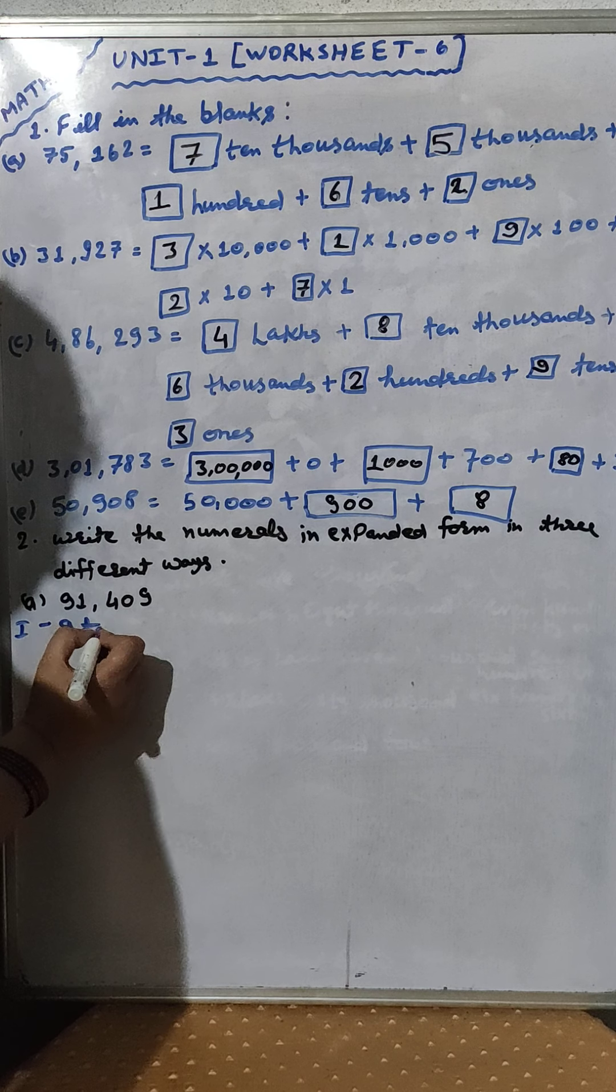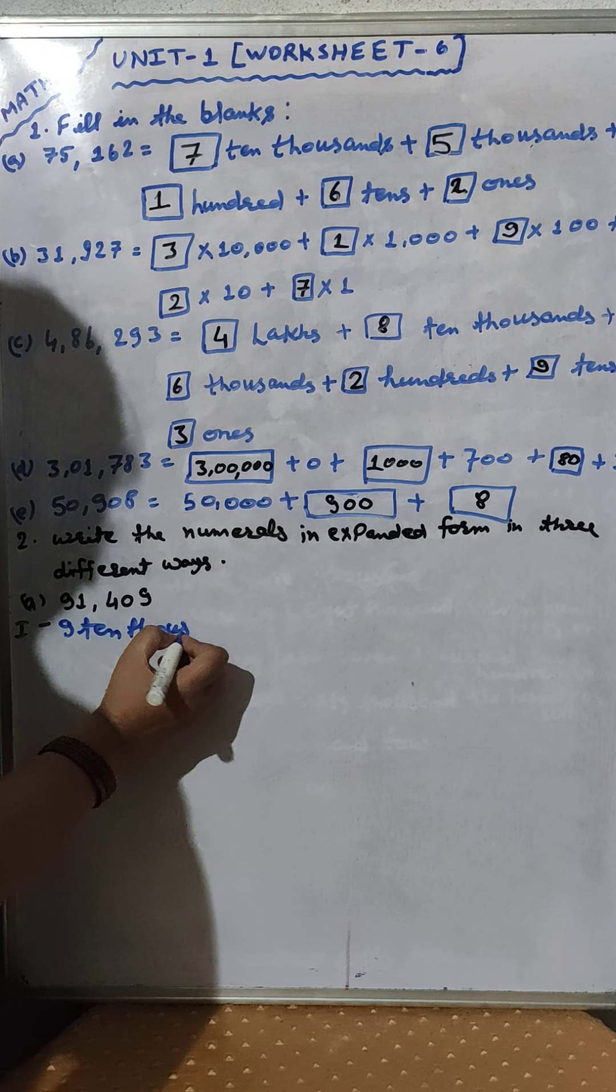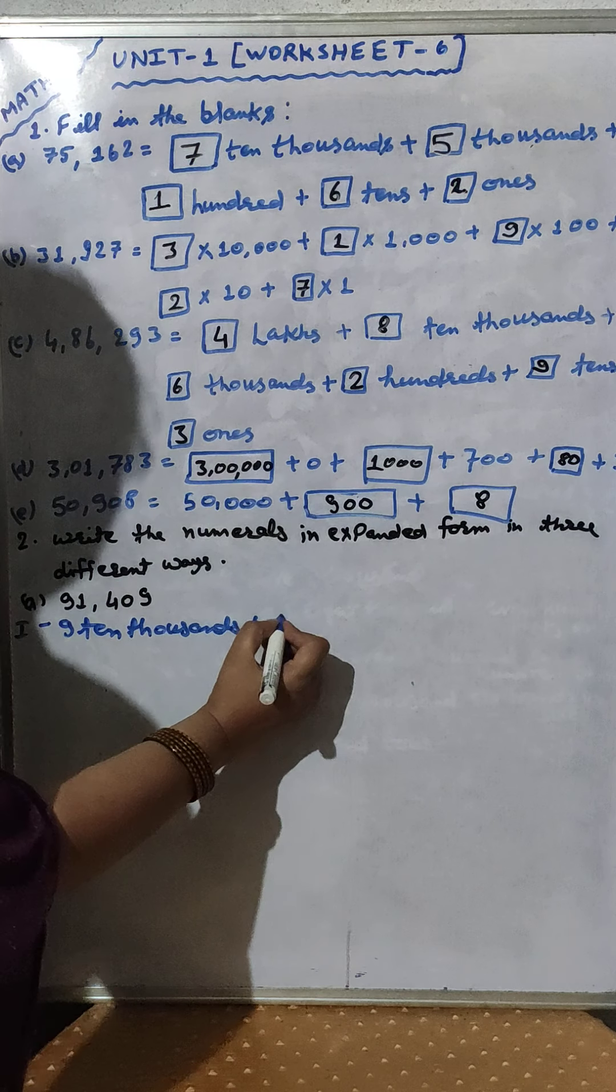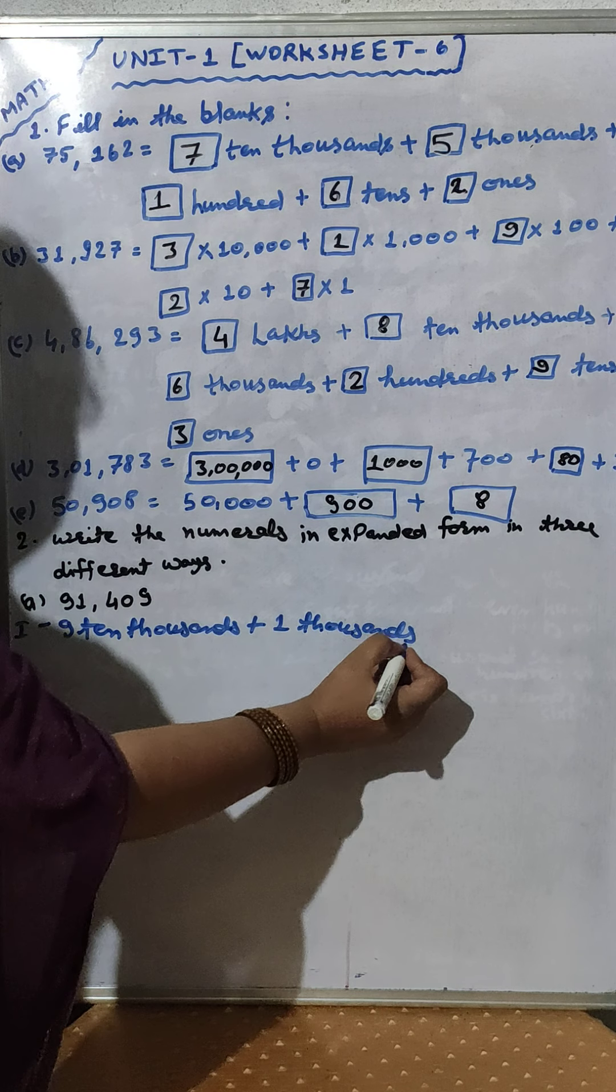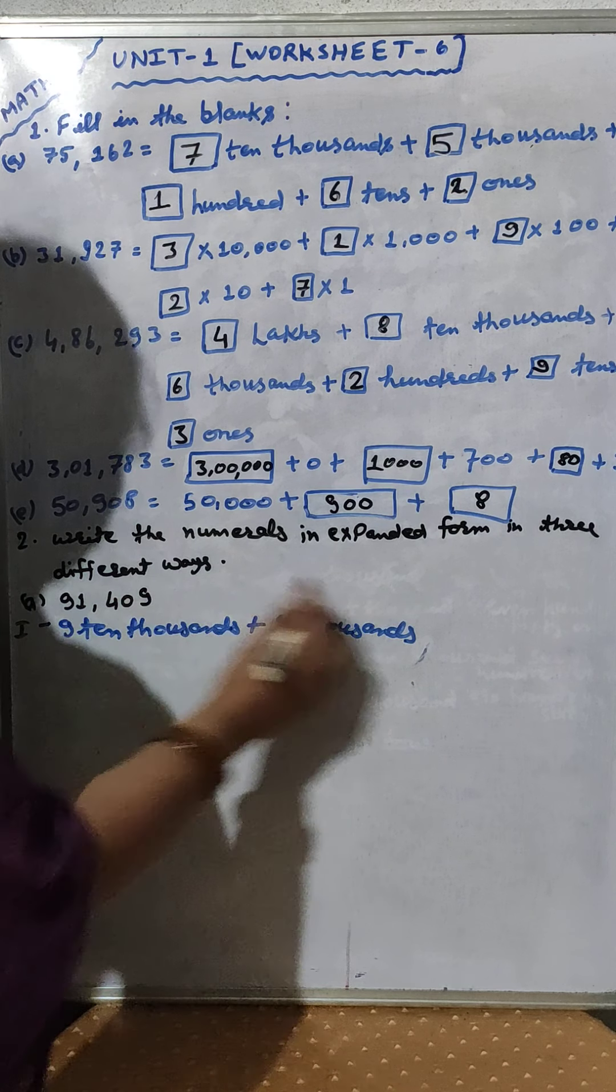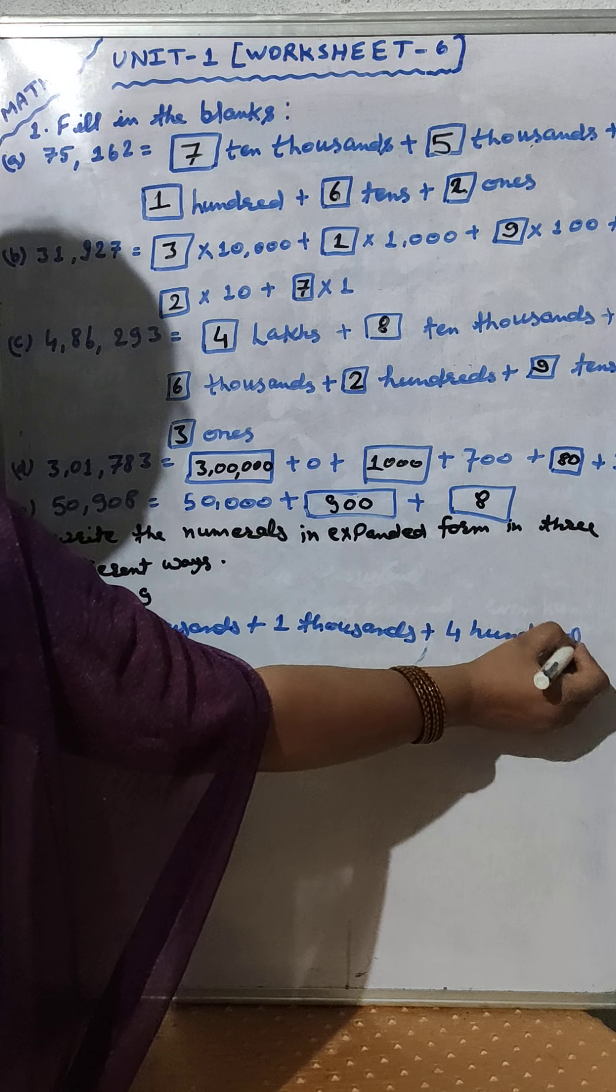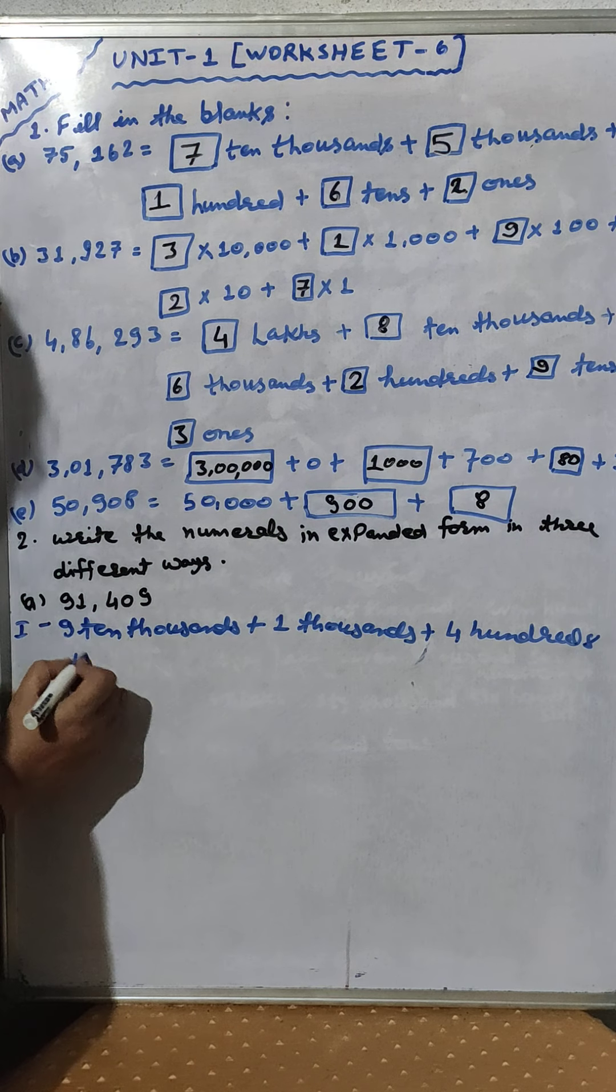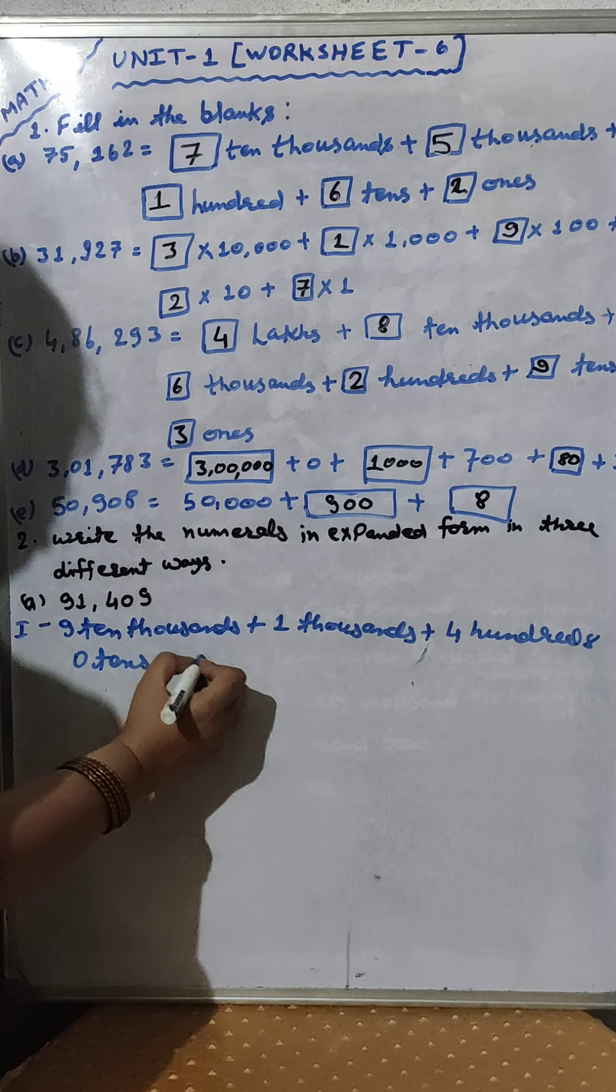At first we will write 1st way. That will be 9 ten thousands, because 9 is in the place of 10,000, plus 1 is in the place of 1000. 4 is in the place of 100s, then after 0 tens, 0 is in the place of tens, and last 9 ones.